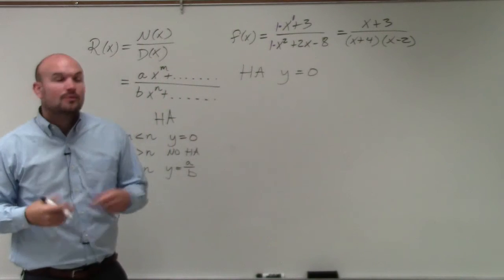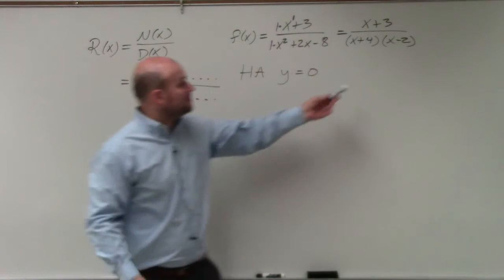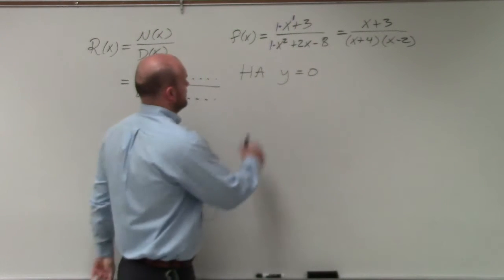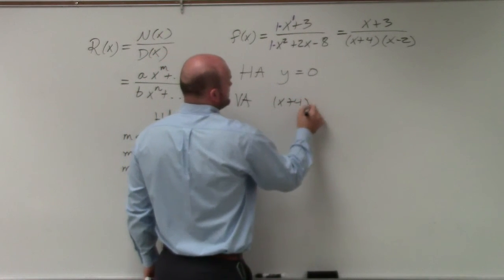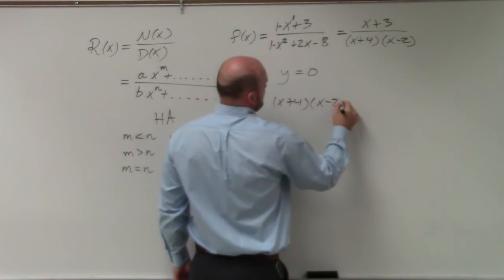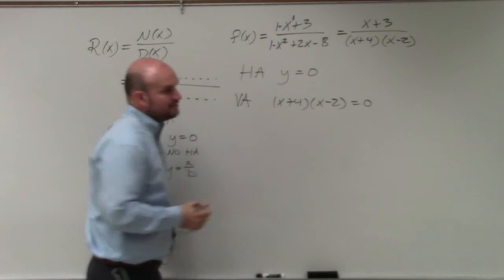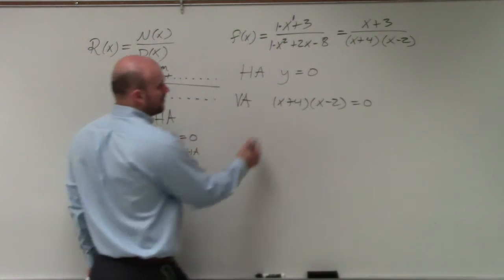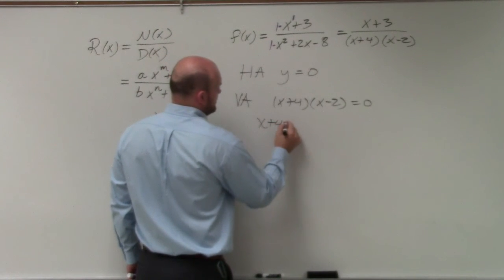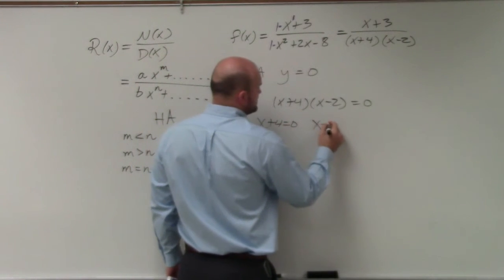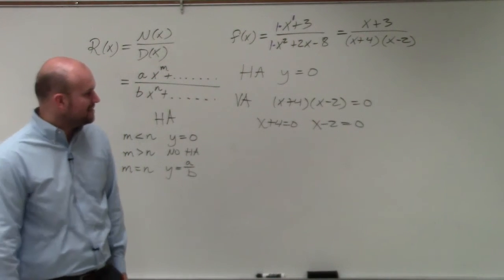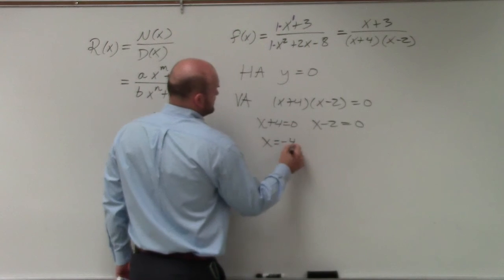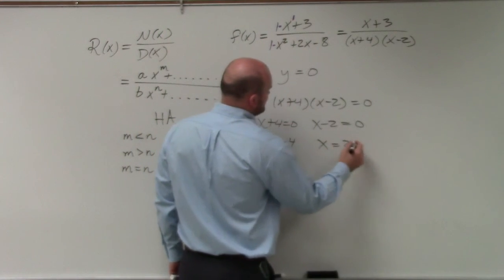I simplified it, and guess what? Nothing really simplifies. So my vertical asymptotes are found by taking the denominator and setting it equal to 0. I want to use the factored form so I can apply the zero product property, which states if you have a product equal to 0, then you set both factors equal to 0. So x equals negative 4 and x equals 2.